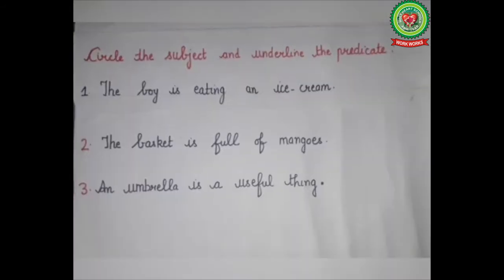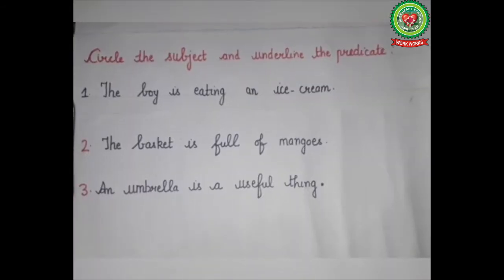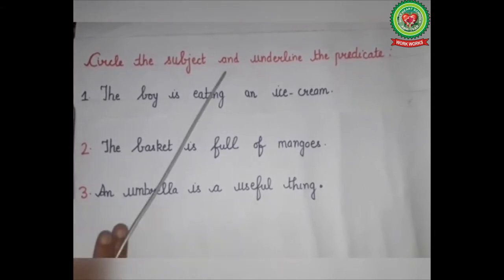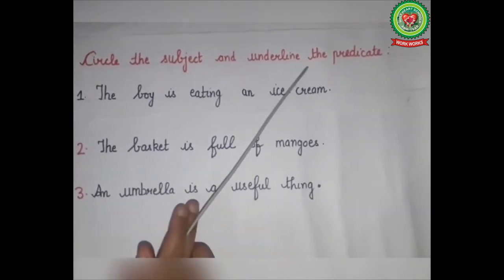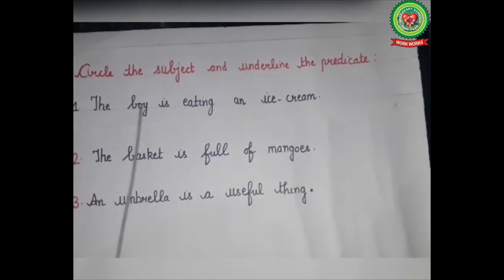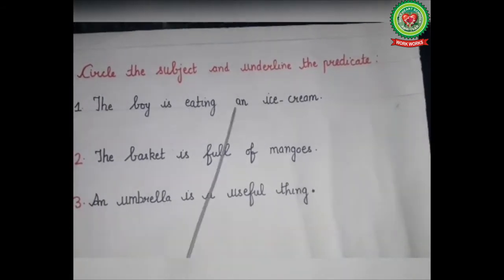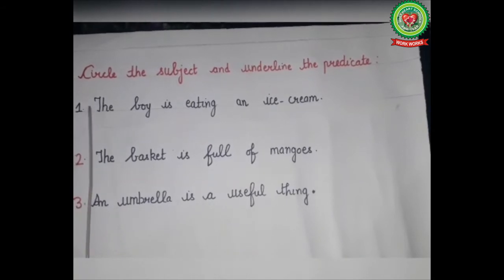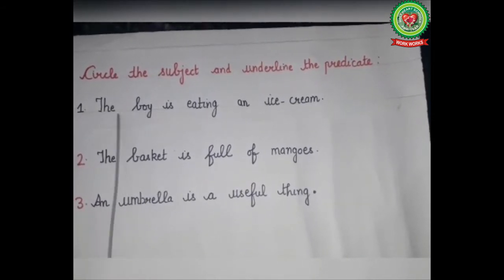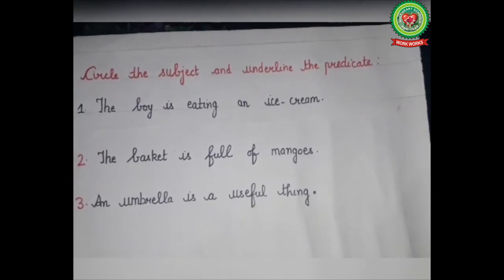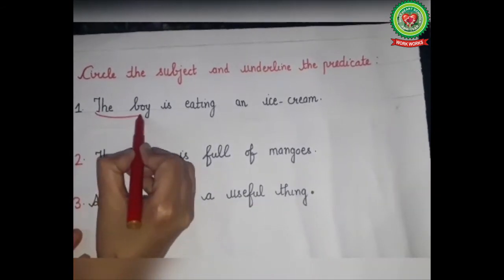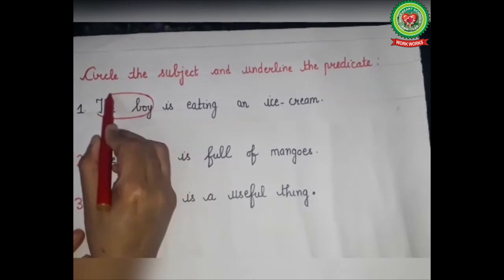Children, now you will do an interesting exercise in which you have to circle the subject and underline the predicate. First of all, read the sentence carefully. 'The boy is eating an ice cream.' About whom we are talking in the sentence? The answer is 'the boy,' so we will circle 'the boy' as the subject of the sentence.